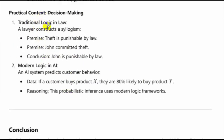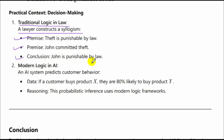Practical context — decision making: traditional logic in law: a lawyer constructs a syllogism — premise one: theft is punishable by law; premise two: John committed theft; conclusion: John is punishable by law. Modern logic in AI: an AI system predicts customer behavior — data shows if a customer buys product X, they are 80% likely to buy product Y. This probabilistic inference uses modern logic frameworks.